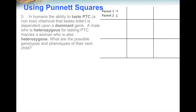Let's look at another example. In humans, the ability to taste PTC is dependent upon a dominant gene. PTC is a non-toxic chemical that tastes really bitter — some people can taste it and others won't. A male is heterozygous for tasting PTC and marries a woman who is also heterozygous. What are the possible genotypes and phenotypes of their next child?